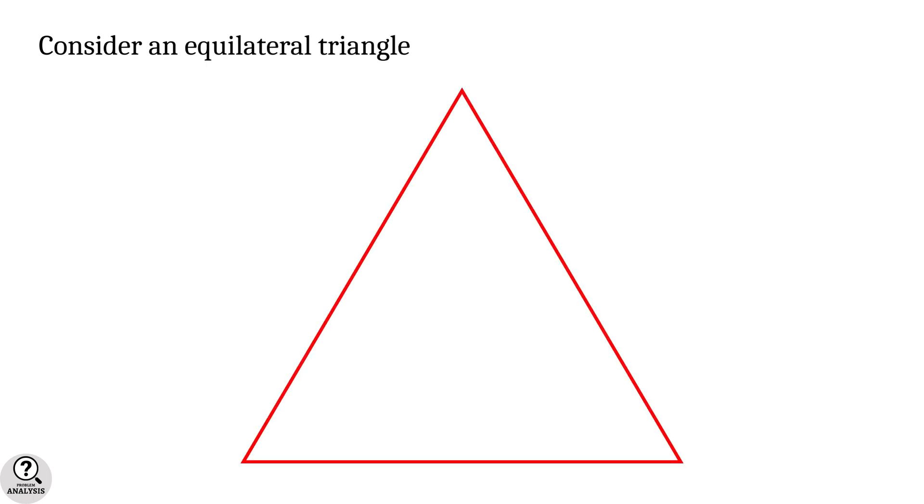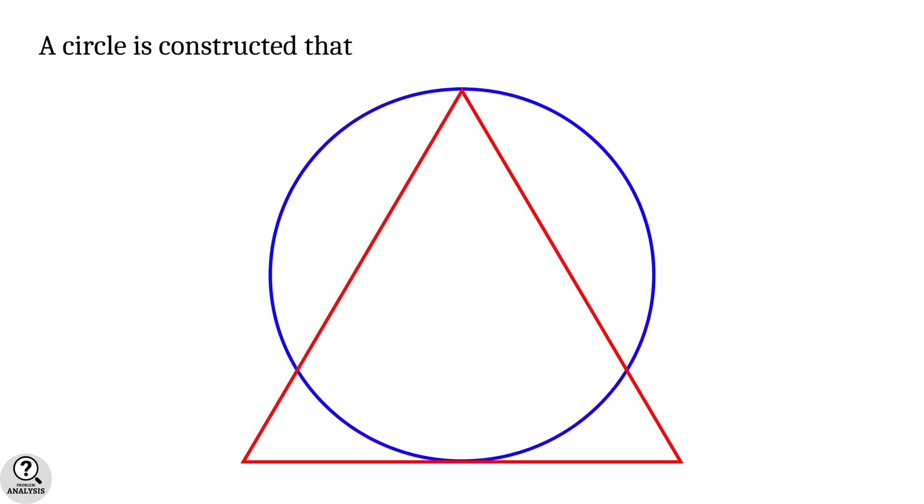Consider an equilateral triangle. A circle is constructed that passes through one corner of the triangle and touches its opposite side. Then my problem is, which one has the larger perimeter, the triangle or the circle?